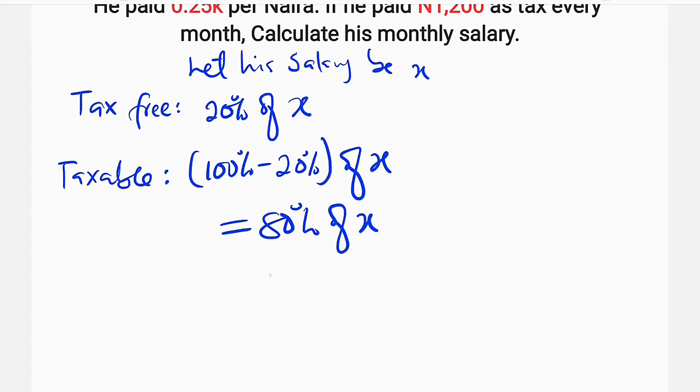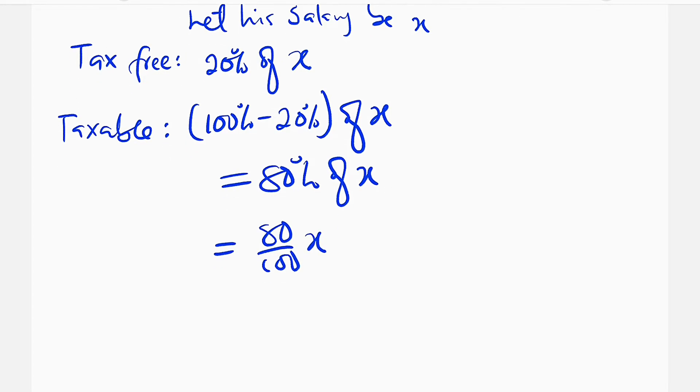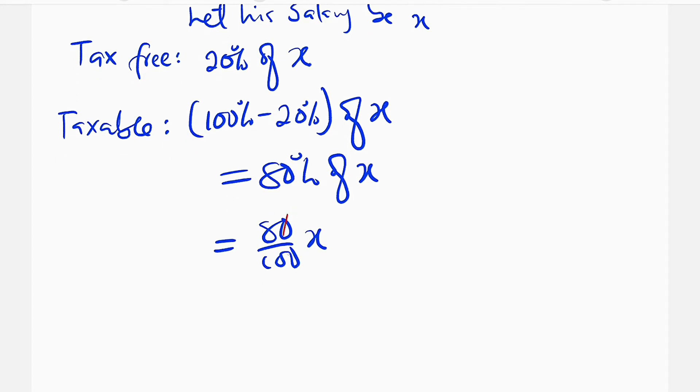And 80% of X is the same thing as 80 divided by 100 times X. And we can reduce this to the lowest term because 0 will cancel 0. And 2 can go into 8 four times, and 2 can go into 10 five times. So we have 4 over 5 times X.